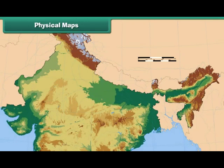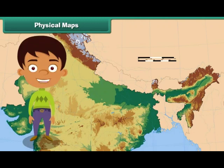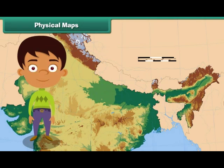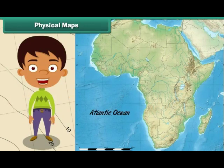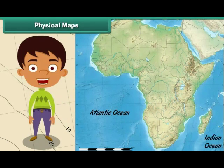Physical maps illustrate the physical features of an area such as mountains, rivers and lakes. Water bodies are usually colored blue in a physical map. Different colors are used to show different land elevations: green for lower elevations and orange or brown for higher elevations. For example, the physical map of Africa shows the African continent located between the Atlantic Ocean on the west and the Indian Ocean in the east. The African continent is also shown as sharing its northeast border with the Red Sea.